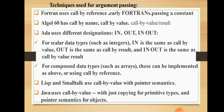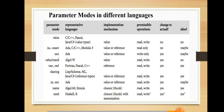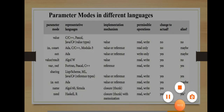To summarize the various techniques used for parameter passing: Fortran uses call by reference; Algol-60 has call by name, call by value, and call by value result; Ada uses in-mode, out-mode, and in-out-mode. For scalar data types, 'in' is the same as call by value, 'out' is the same as call by result, and 'in out' is the same as call by value result. For compound data types such as arrays, these can be implemented using call by reference. Lisp and Smalltalk use call by value with pointer semantics; Java uses call by value with direct copying for primitive types and pointer semantics for objects.